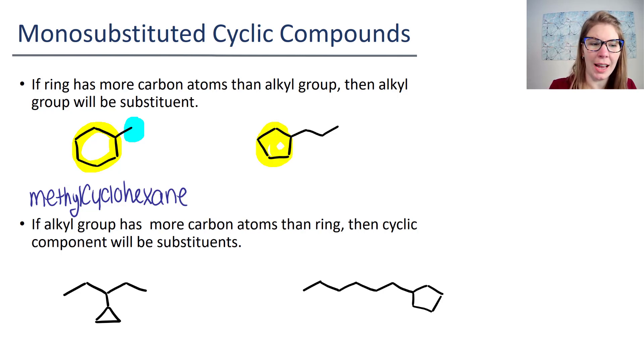For the next one, our parent is five carbons and our substituent is three, so again the ring is going to be the parent because there's more carbons in it, and we have a propyl group as your substituent. So this is propylcyclopentane.